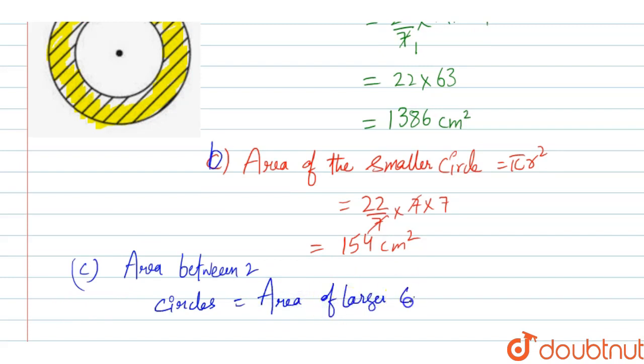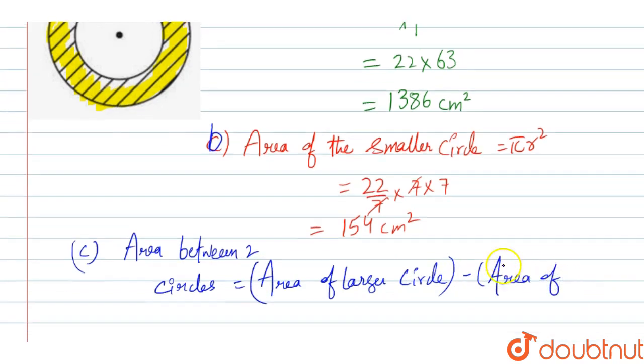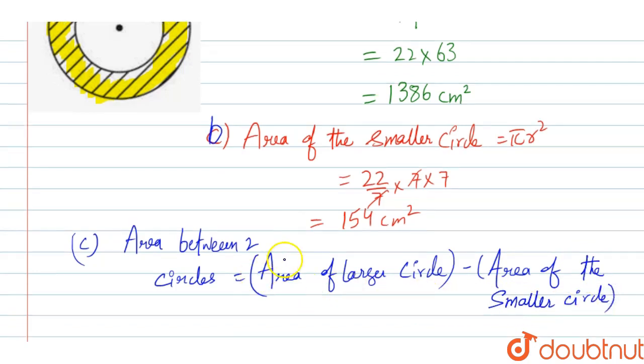Area of the larger circle in bracket, this should be in bracket, minus area of the smaller circle, which is 154 cm square. We have already got it, so we can subtract both of them easily.